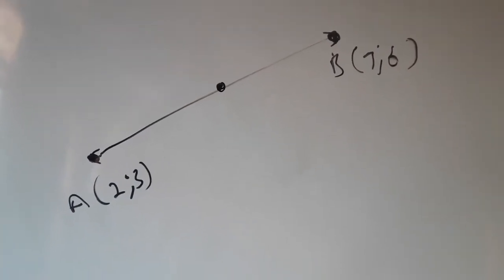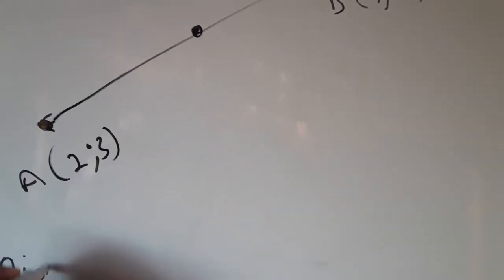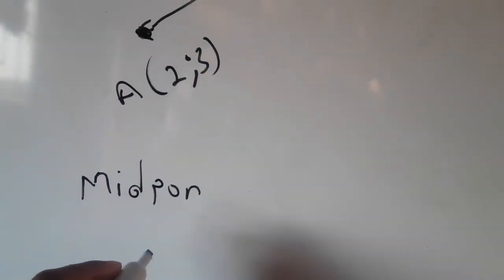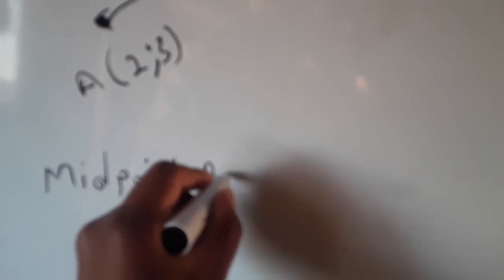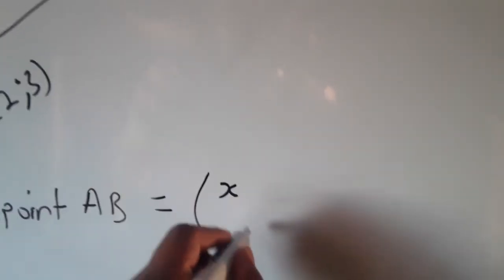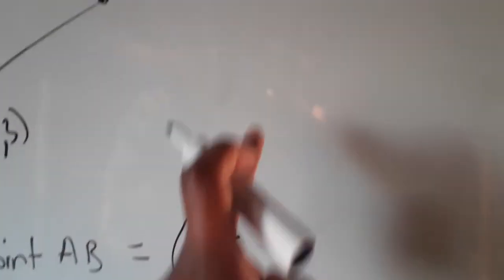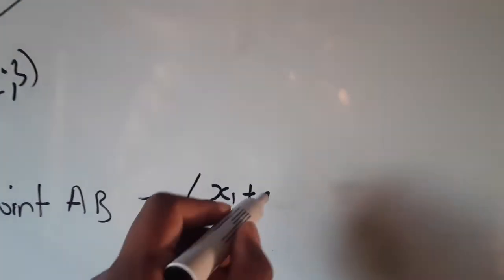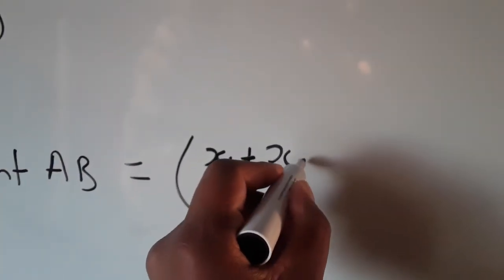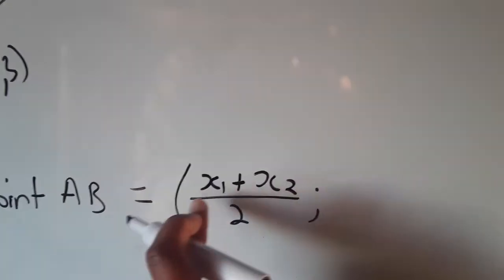This is how we'll calculate the midpoint using the midpoint formula. The midpoint of AB equals x₁ plus x₂ all over 2 - that's the first value of x plus the second value of x, all over 2, to find the middle point of the x-axis.